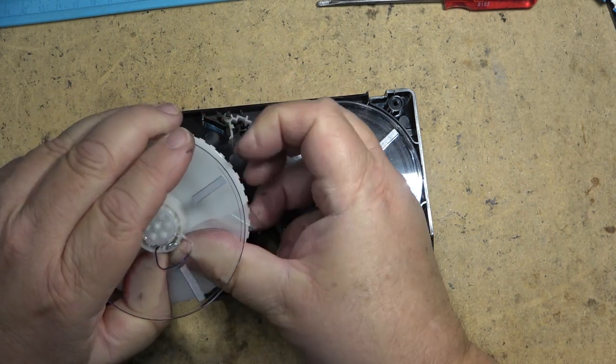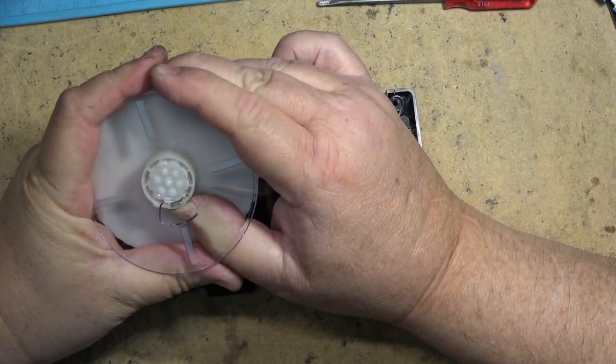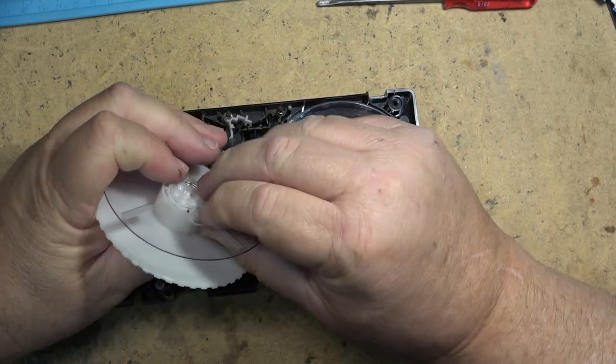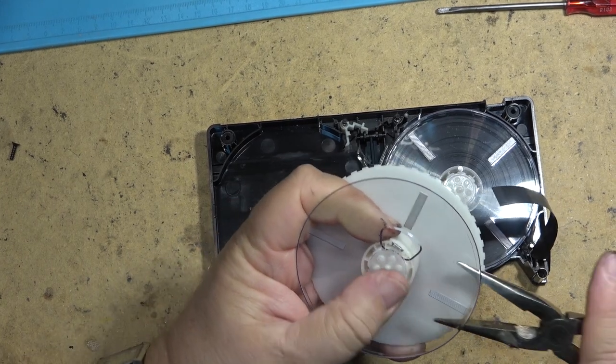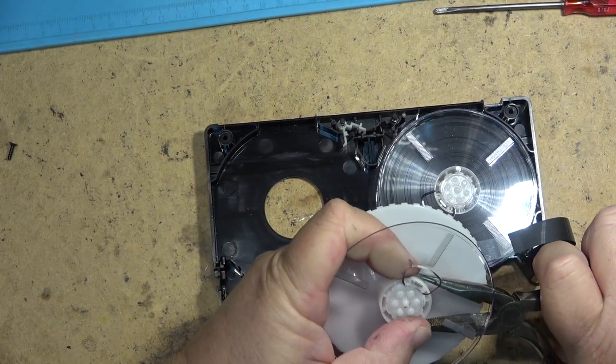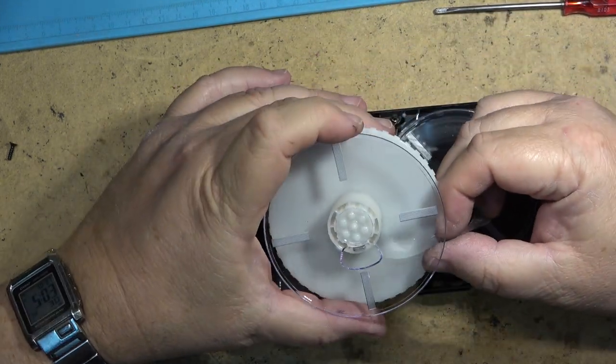And then we're going to take the catch and put it in there and then we have to snap it in. And this is the hard part, getting the catch to go in. If you press hard enough you can usually get it to lock in place, or use a pair of needle nose pliers for those ones that are really tough to attach. There, just like that. That's how you snap it back together.